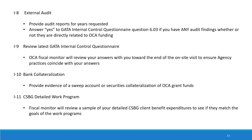The next area of review is your external audit. We're going to review your last external audit to see if there were any comments or findings regarding OCA funding or anything that may be a concern to the overall financial viability of your agency. We also request that you answer yes to the GATA internal control questionnaire number 6.03 if you have any audit findings, whether or not they are directly related to OCA funding. We also pull your GATA internal questionnaire from the most recent year and compare your answers to the overall practices in your agency. If we see something you've answered that your practice is opposite of how you answered, we'll discuss that with you.